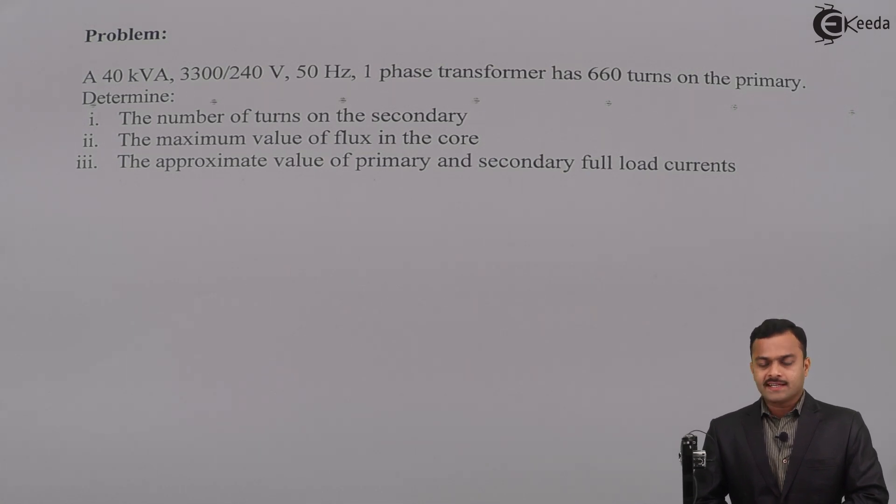A 40 kVA, 3300 slash 240 volt, 50 hertz, single phase transformer has 660 turns on the primary. Determine the number of turns on the secondary, the maximum value of flux in the core, and the approximate value of primary and secondary full load current.